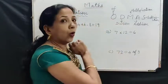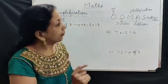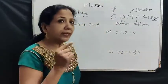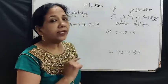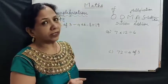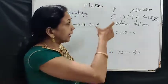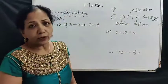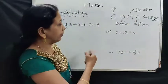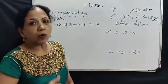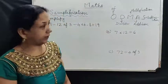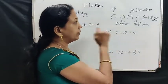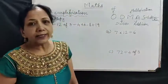So ODMAS: first O — 'of', then division, then multiplication, then addition, then last subtraction. In that manner we have to calculate. Here given the first example with smaller numbers: 7 multiplied by 12 divided by 6.